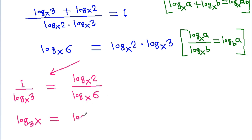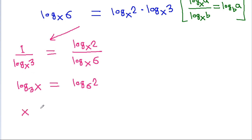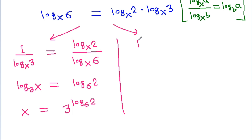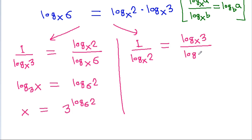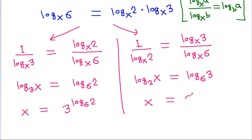So it will be log base 6 of 3 equals log base x of 2, giving x equal to 3 raised to the power log base x of 2. Also from here, 1 by log base x of 2 equals log base x of 2, and x will be equal to 2 raised to the power log base x of 3.